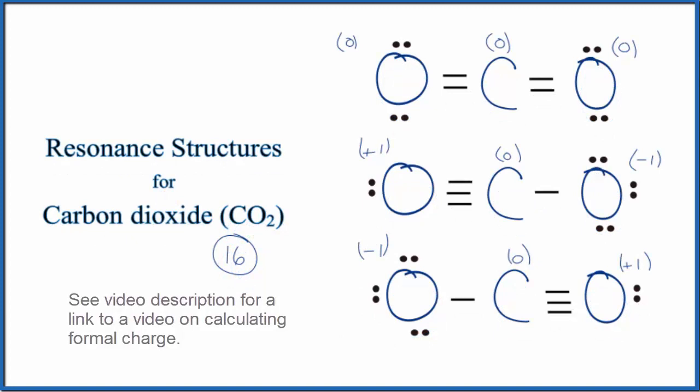When we look at formal charges, we're looking for formal charges that are as close to zero as possible. That means it's a more likely or favorable Lewis structure. This structure right here is the one that has all of the formal charges as zero, so this is the best or most stable Lewis structure for CO2.